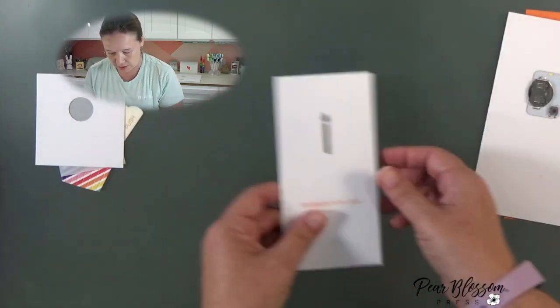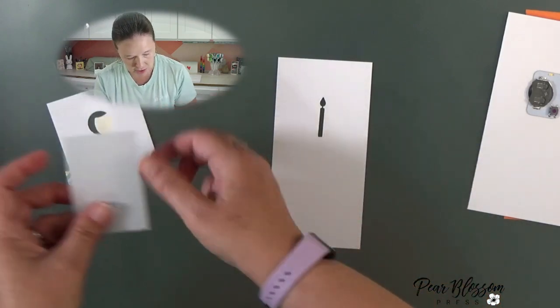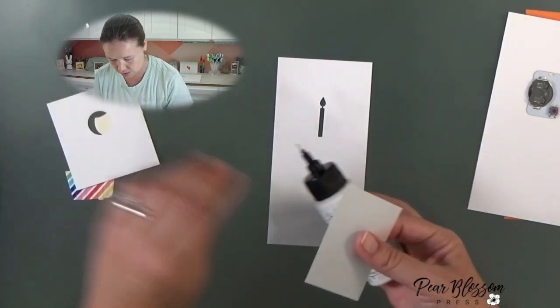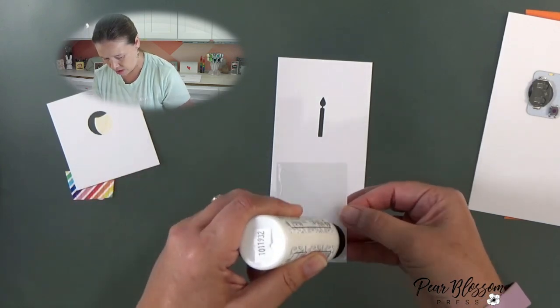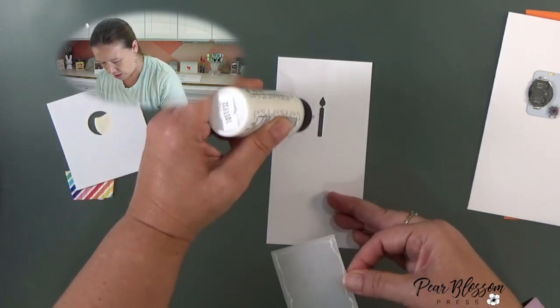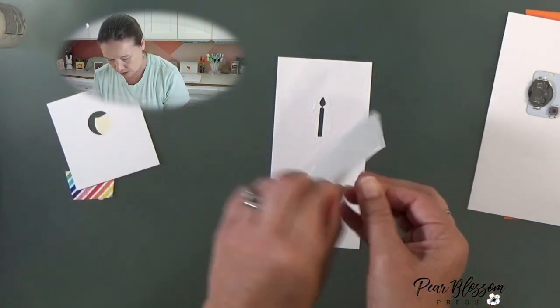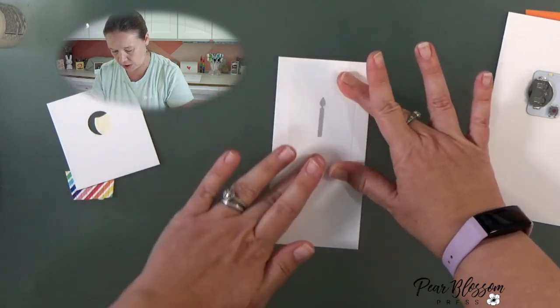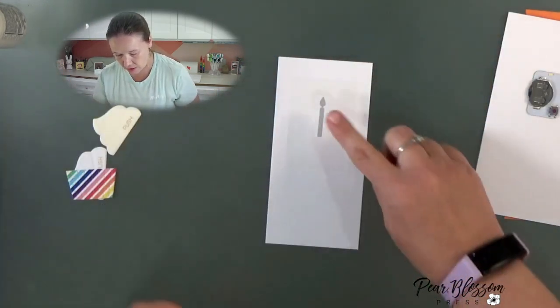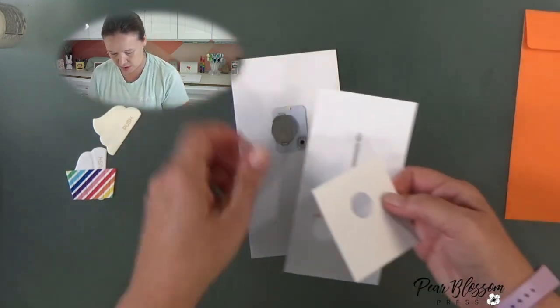Now all we need to do is cover it up. Flip your panel over. On the back side here you're going to want to cover the window with vellum. I usually just give myself a little bit of glue near the outline and the edges just in case, so it's nice and flat and clean. So we've got that window covered.